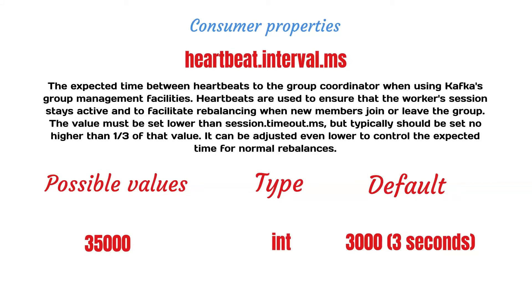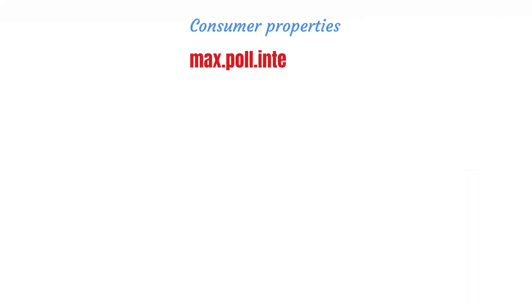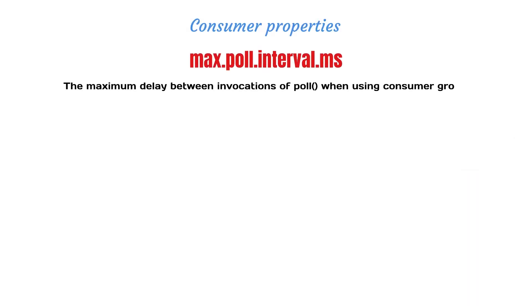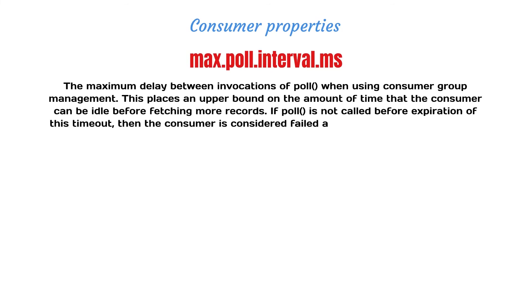A lower heartbeat interval will generate a faster rebalancing. The default setting is 3 seconds. For larger groups, it may be wise to increase this setting.